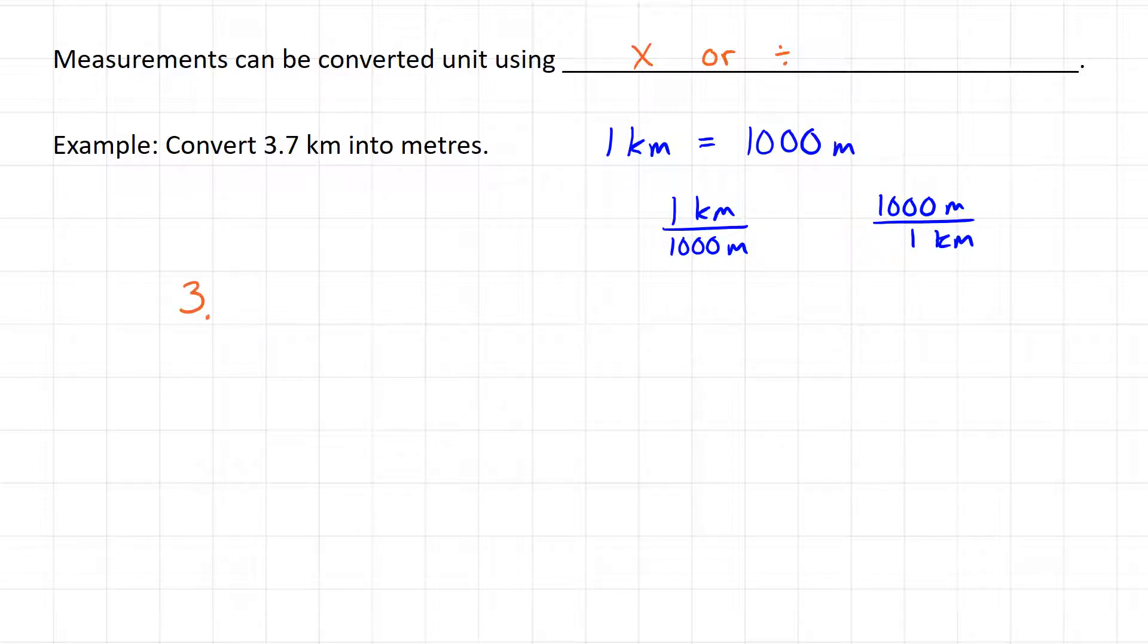We're trying to convert 3.7 kilometers, and what we're going to do is multiply it by one of these fractions. We decide which one based on the unit we're trying to get rid of. We want to get rid of kilometers and be left with meters. So what we do is put the unit we want to get rid of on the bottom and the unit we want to have left over at the end on top. We find we have kilometers on the bottom and meters on top, so we need to choose this one: 1,000 meters per 1 kilometer.